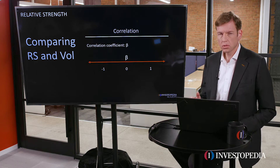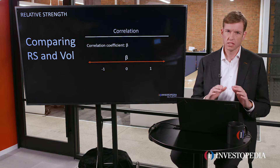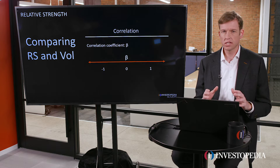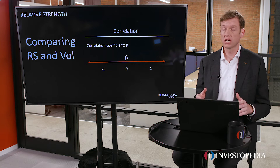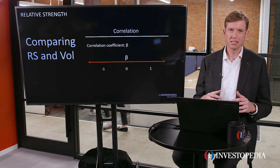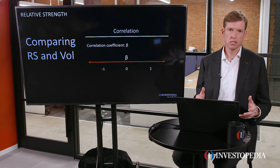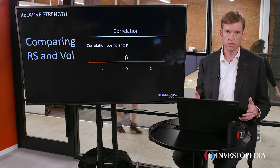One of the first things we want to do when we're evaluating relative strength, whether that's a positive for a company or a negative, is to try to understand why they are outperforming. The best place to start that kind of analysis is with beta. Beta looks at the company and its price performance and tries to figure out why the stock is performing the way that it is. You can think about beta as how correlated the stock is versus some kind of benchmark — usually the S&P 500.